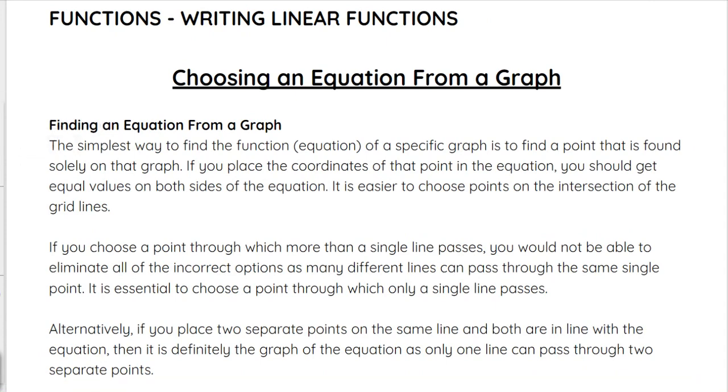The simplest way that we can find the function or the equation of a specific graph is to find a point that is found solely on that graph. If you place the coordinates of that point into the equation options, you should get equal values on both sides of the equation, or a true statement like 7 equals 7 or 4 equals 4. Those are true statements that would indicate that that point is part of that equation or on the line represented by that equation.